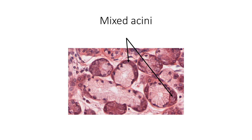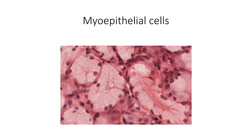Both serous and mucous acini as well as the proximal ducts are enclosed by myoepithelial cells, which have contractile properties. These cells lie within the basement membrane of the acinus, appearing as either flattened or round profile nuclei close to the basement membrane. They help in moving the secretion of the acini towards the excretory duct.